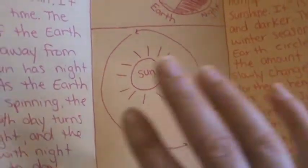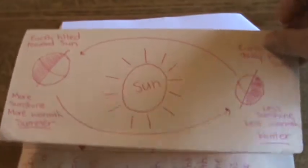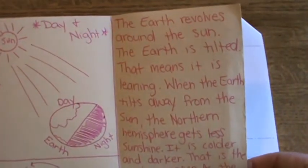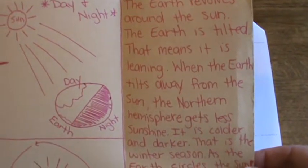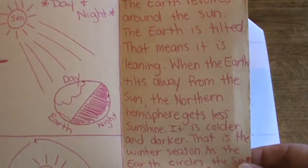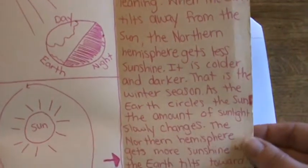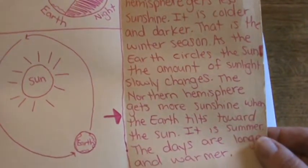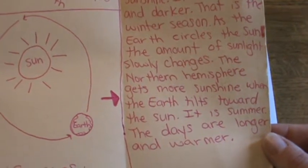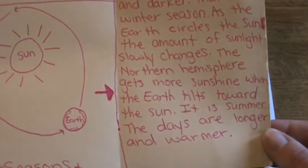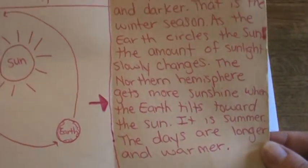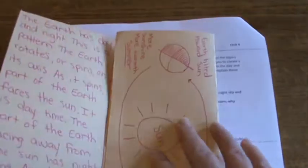For the seasons, the Earth revolves around the Sun and that's what causes our seasons. For the seasons description, they might write: 'The Earth revolves around the Sun. The Earth is tilted — that means it is leaning. When the Earth tilts away from the Sun, the northern hemisphere gets less sunshine; it is colder and darker — this is the winter season. As the Earth circles the Sun, the amount of sunlight slowly changes. When the Earth tilts toward the Sun, the northern hemisphere gets more sunshine — it is summer. These days are longer and warmer.'